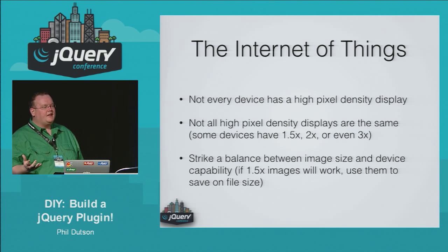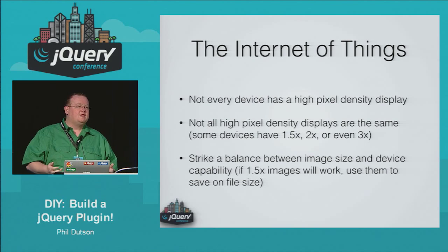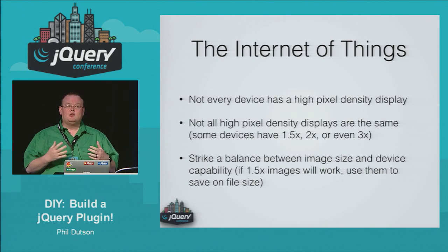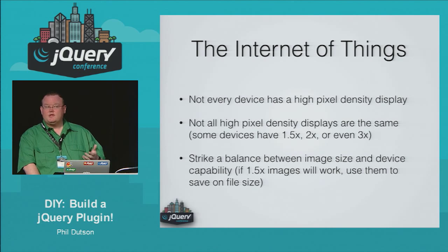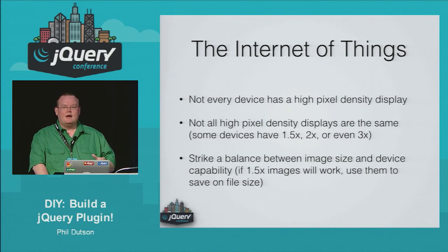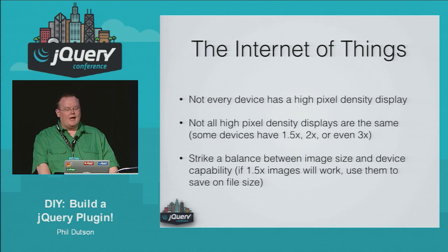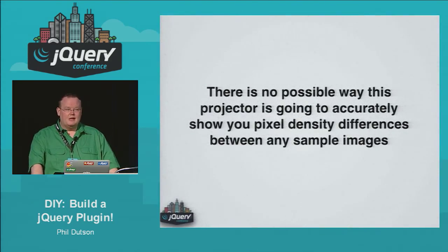So what should your strategy be? Well, if you're doing some tests, you can try serving images that are one-and-a-half times the normal resolution of smaller images, or you can try serving those 2x and 3x images and kind of see what you get. I just want to point out that there is no possible way this projector is going to accurately show you pixel density differences between any sample images.